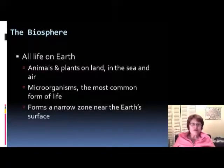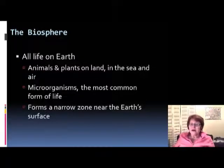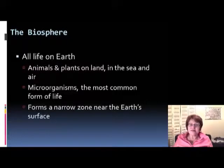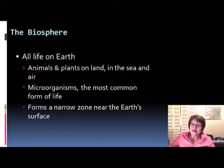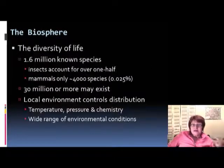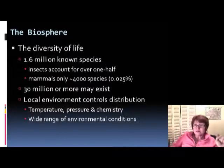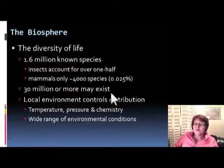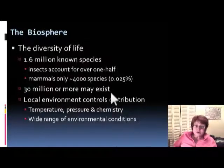Microorganisms are the most common form of life and they form a relatively narrow zone above and below the earth. If you think about the deep sea and the trenches where there is pretty active life — the diversity of life. There are about 1.6 million known species, but it could be that there are 30 million or more species which we don't know about.